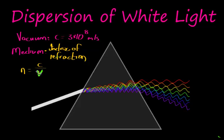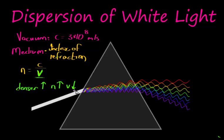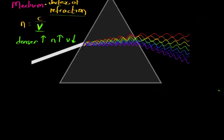The denser the medium, the higher the index of refraction, meaning the velocity decreases. So why does this influence the refraction of light? When light bends in a different medium, it's called refraction, and it bends towards the normal of the surface.